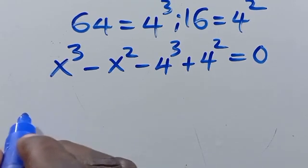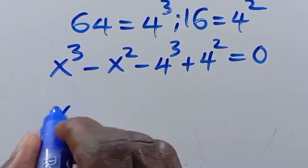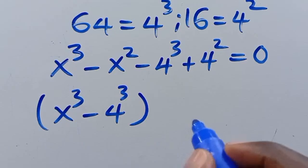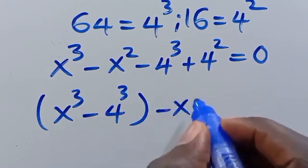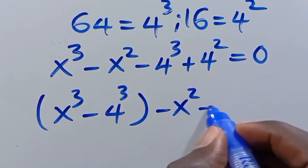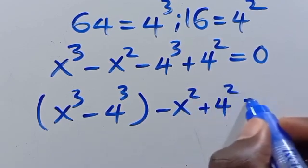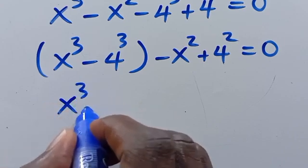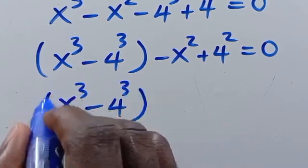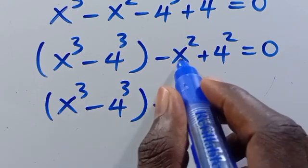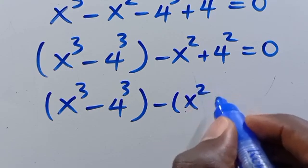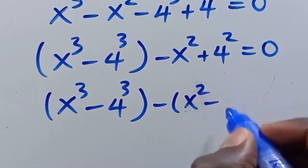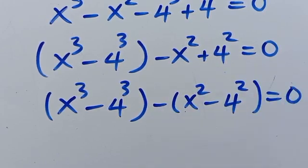Taking this together, we have x to the power of 3 minus 4 to the power of 3 in parenthesis, then minus x squared plus 4 to the power of 2. Let's factor minus from the second group, so we have minus of x squared minus 4 to the power of 2. Everything equals 0.